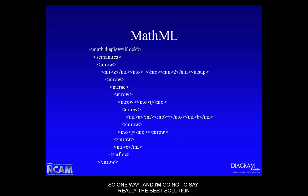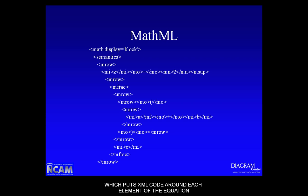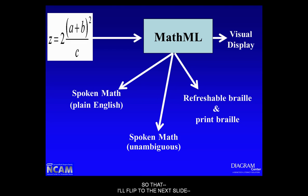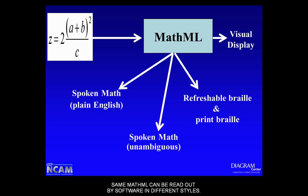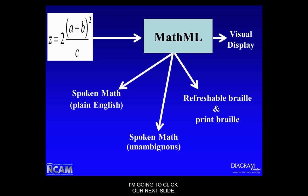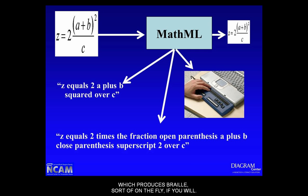The best solution is to mark up your math in a markup language called MathML, which puts XML code around each element of the equation. From that one bit of MathML, you can have many different ways of rendering the math — it can be rendered visually, in audio in multiple versions, or output directly to a refreshable Braille display, or even create print Braille from MathML.